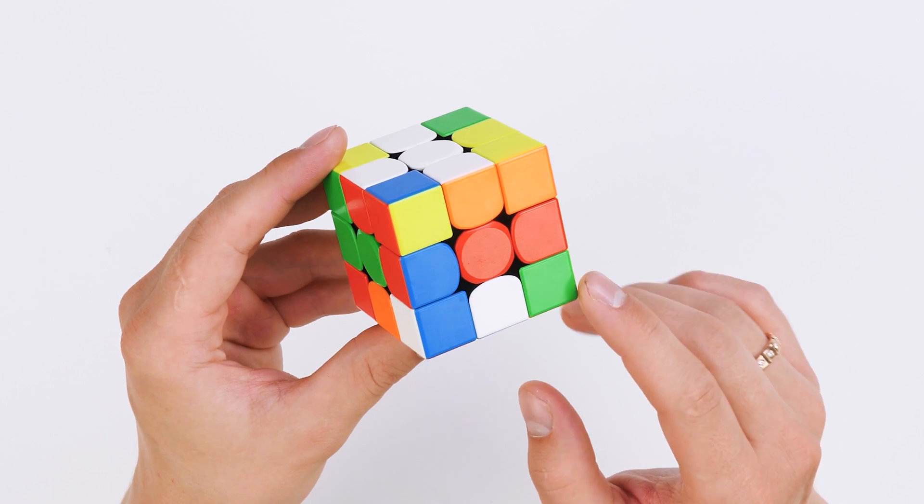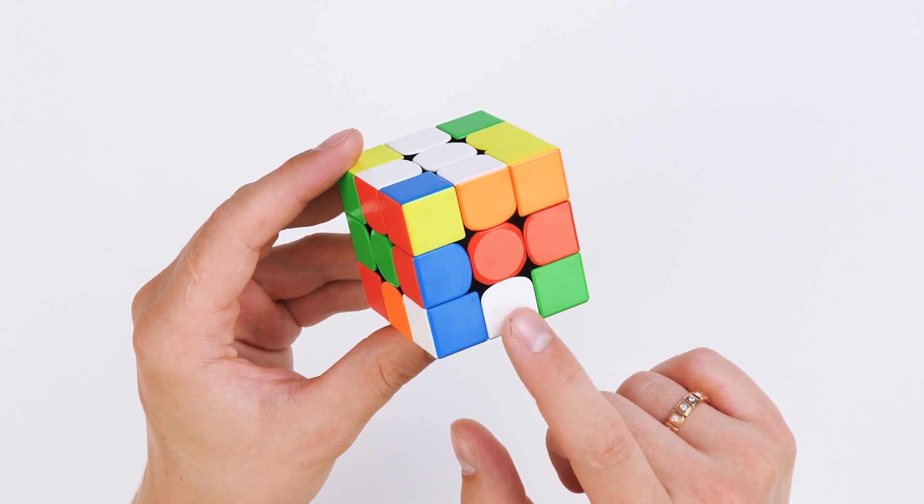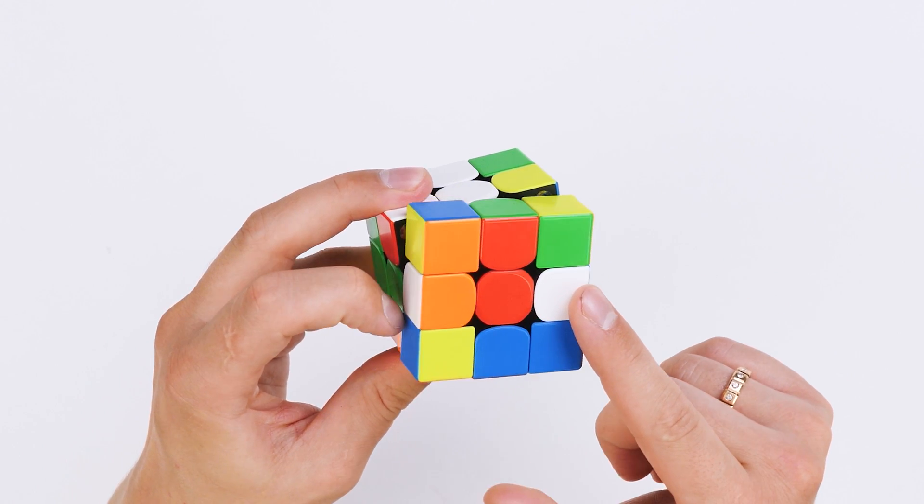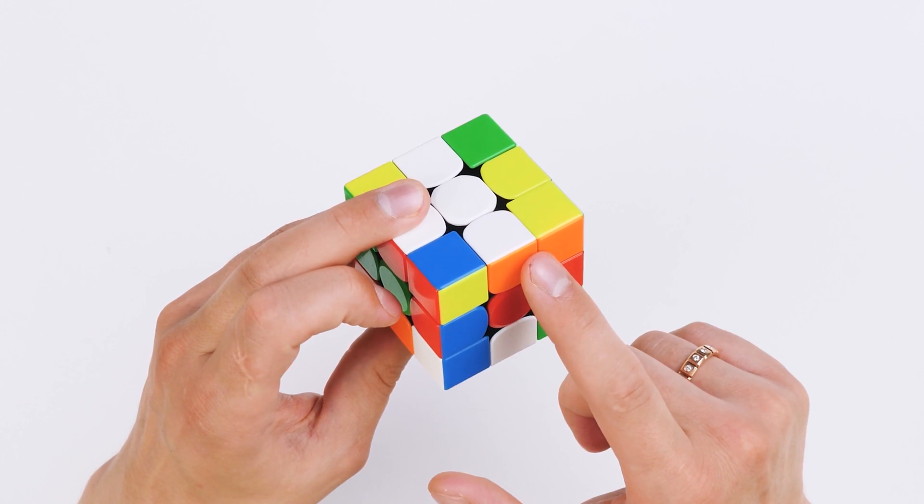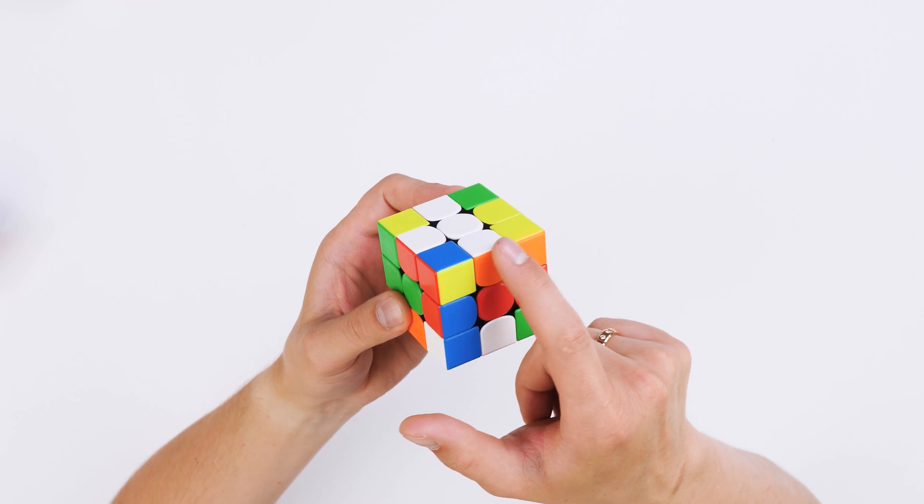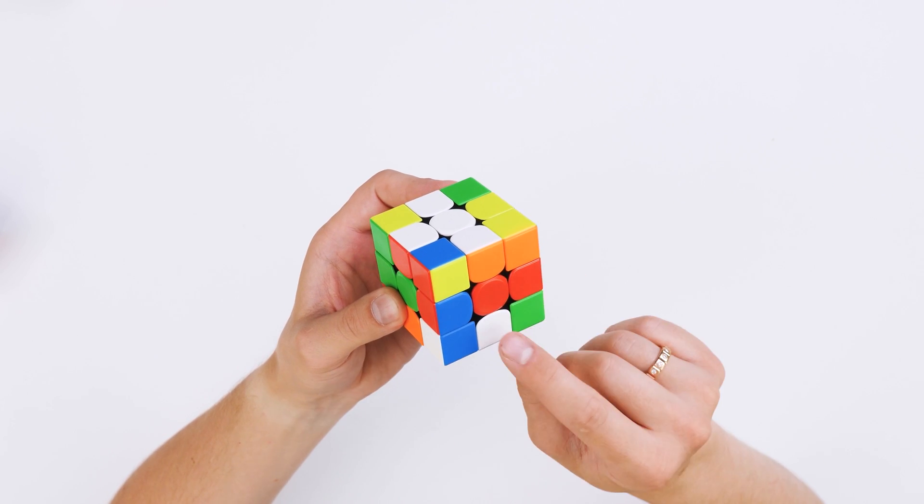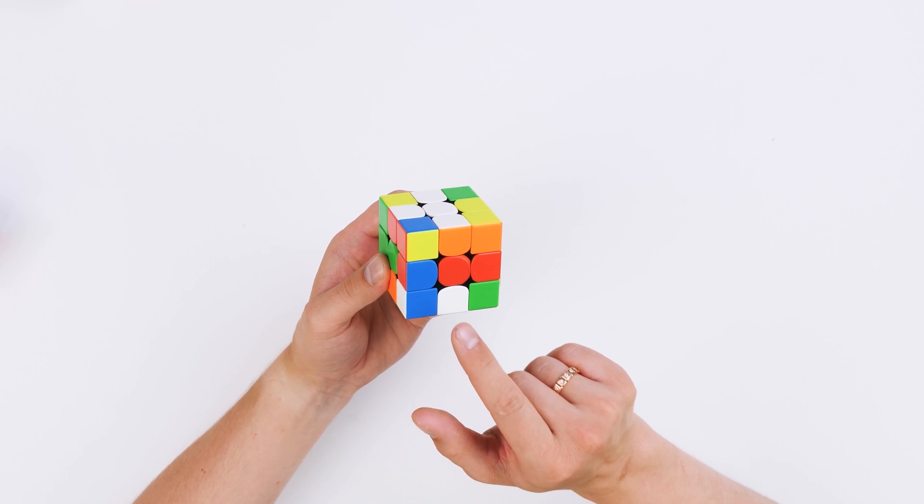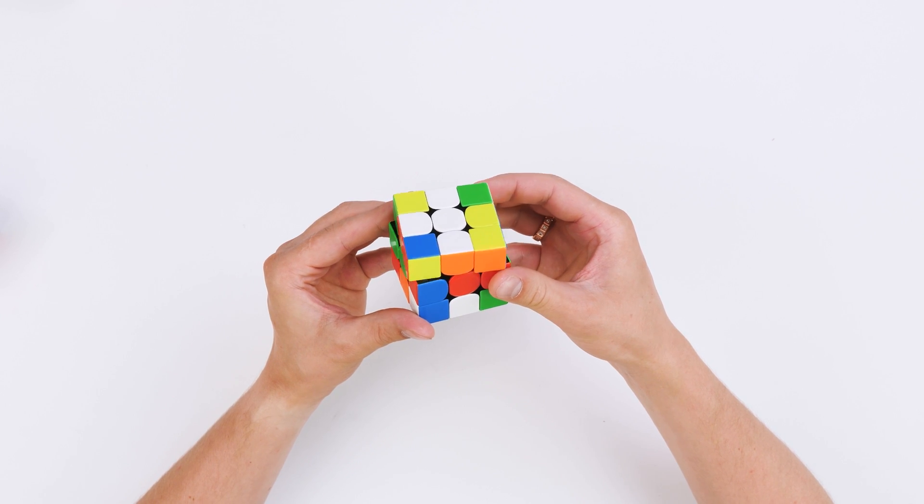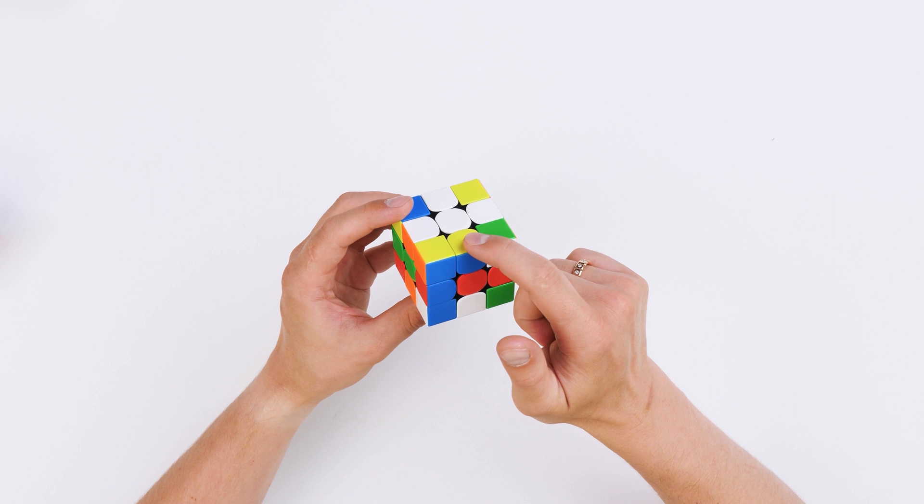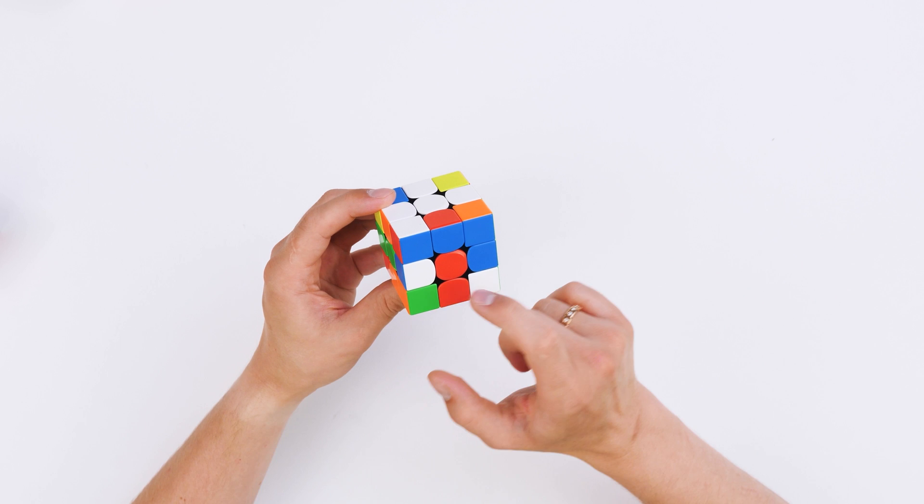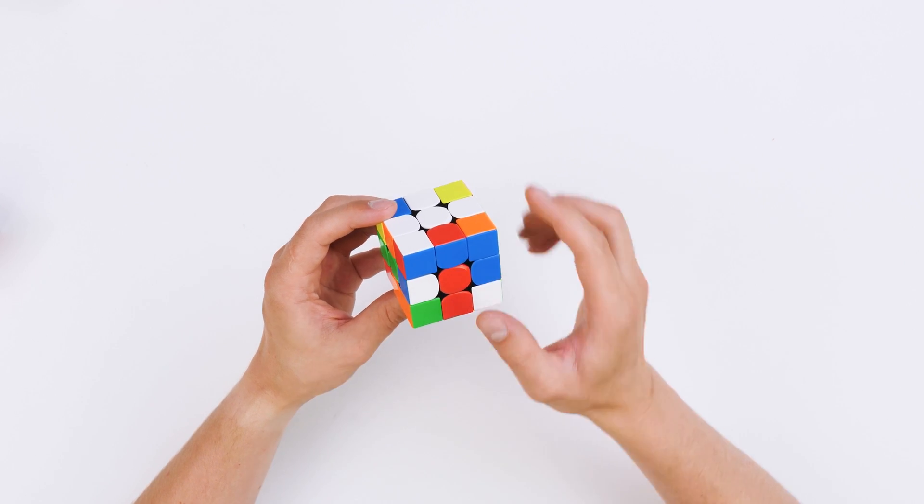Consider another situation where we have an edge at the third layer. But if we try to put it in a convenient position, we will destroy what is already solved on a top face. In this case, we need to make sure that there is no occupied slot over this edge. There should be free space right above this edge. To do this, we turn the top face clockwise. And now it's free. And then this edge easily becomes good. And then we know what to do with it.